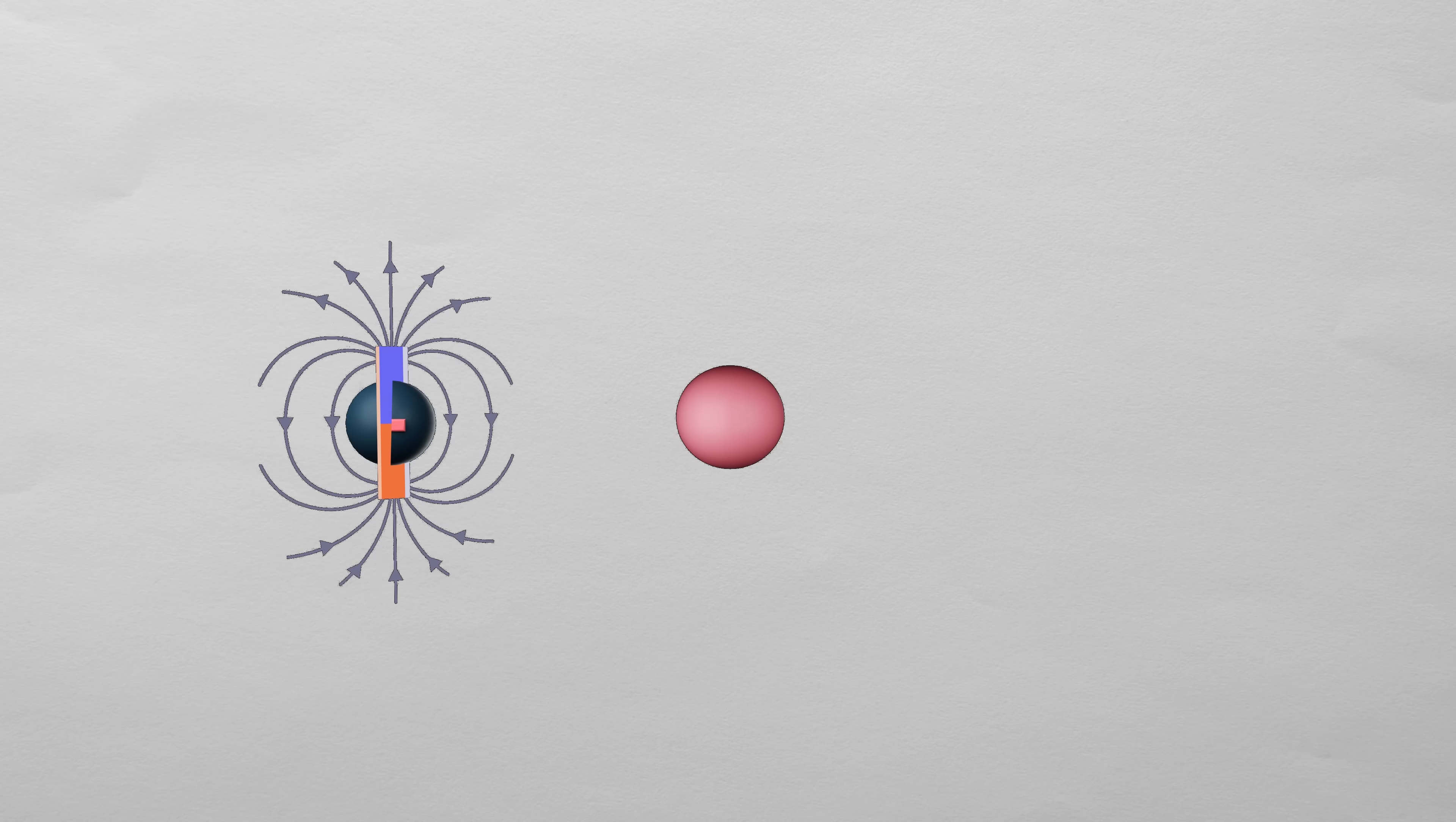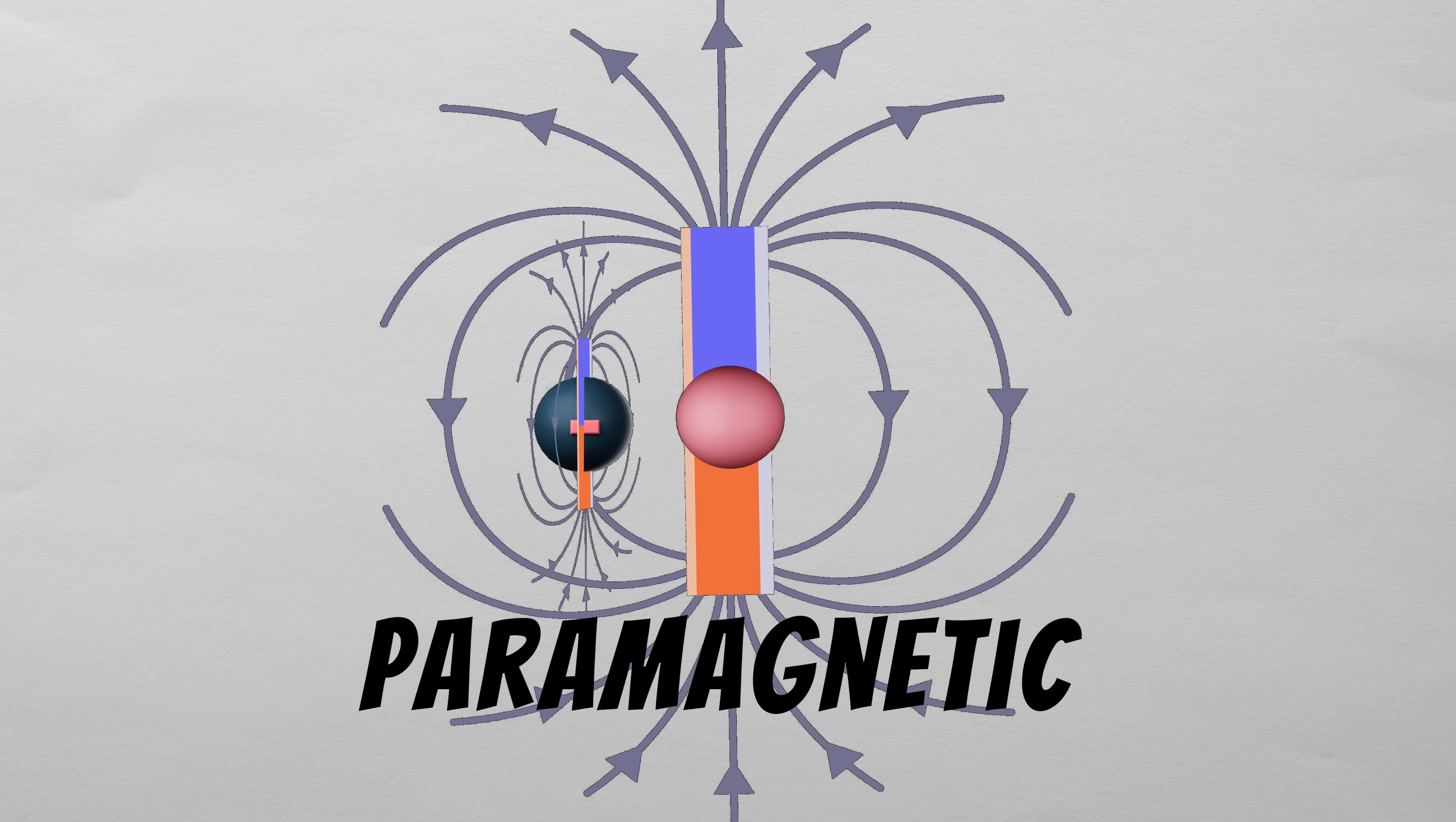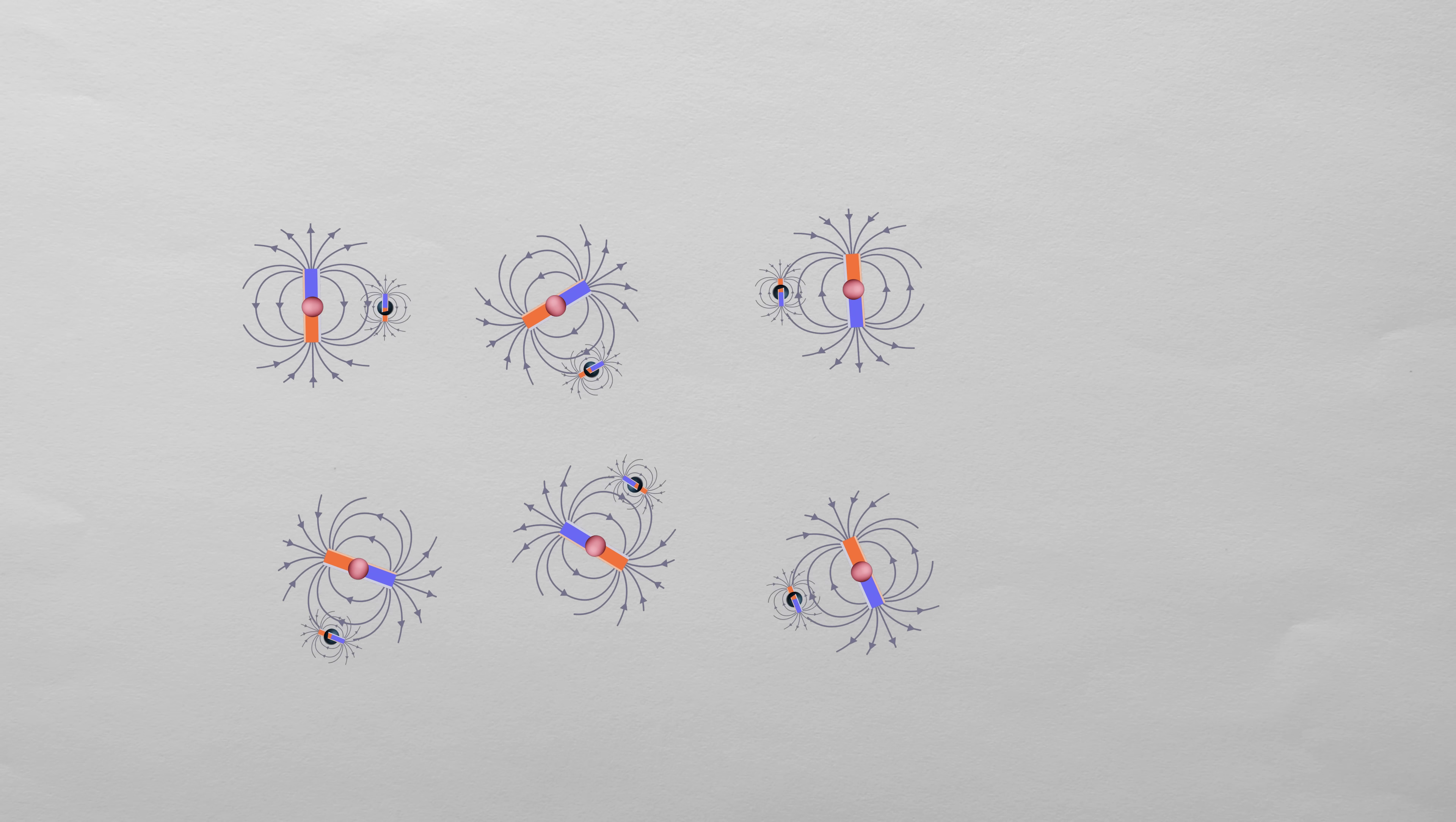But what if an atom doesn't have a completely filled orbital? In this case, the orbital magnetic moments don't cancel out, and neither do the spin magnetic moments. These materials are called paramagnetic. They contain tiny magnetic moments that align slightly when placed in an external magnetic field, making them weakly attracted to a magnet.